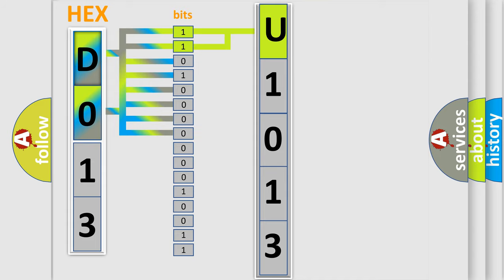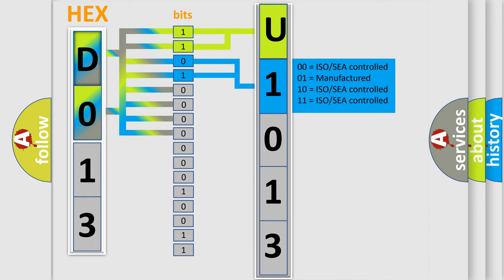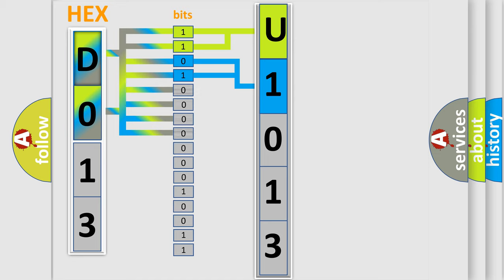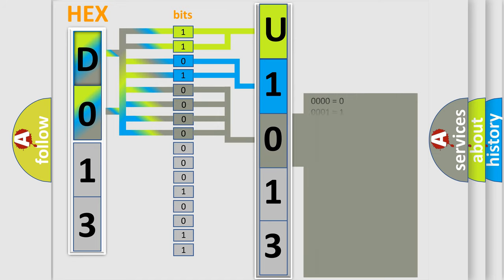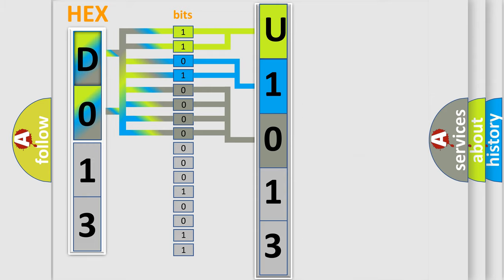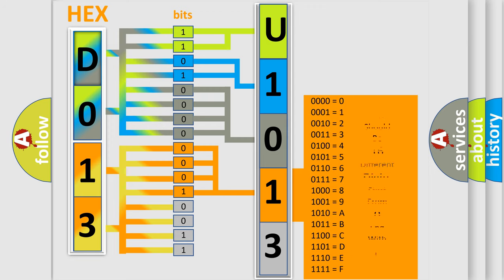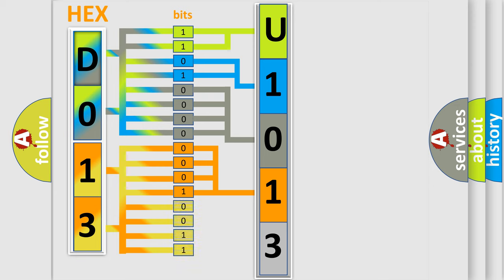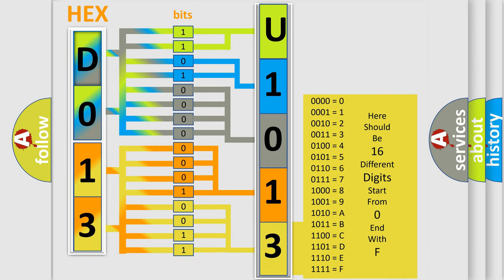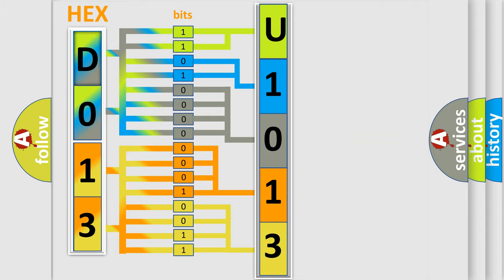The next two bits determine the second character. The last bits of the first byte define the third character of the code. The second byte is composed of a combination of eight bits. The first four bits determine the fourth character of the code, and the combination of the last four bits defines the fifth character. A single byte conceals 256 possible combinations.